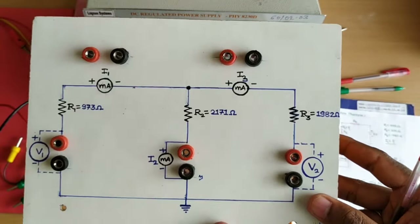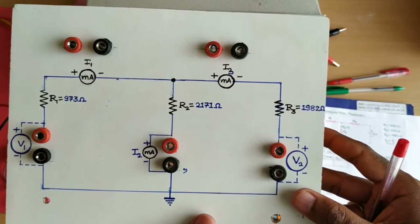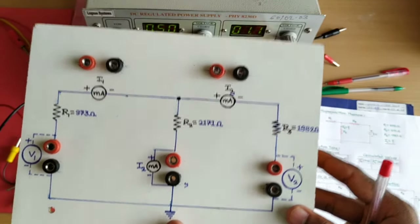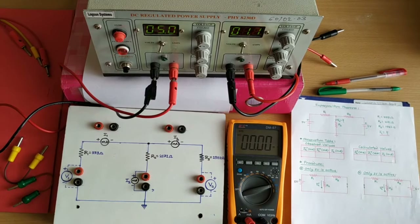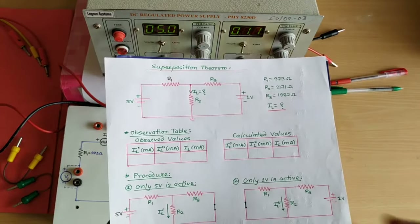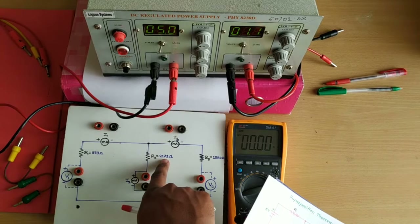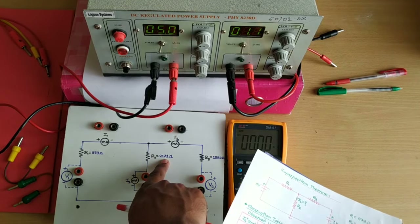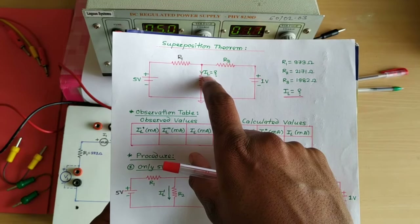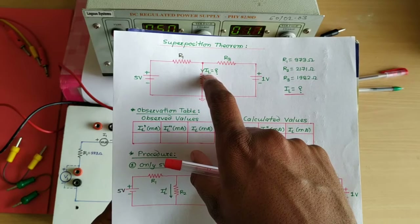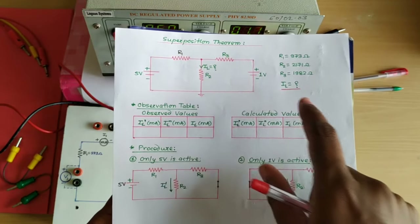This is a handmade kit. In this experiment, we are calculating the current flowing through R2, the middle resistance. R2 is acting as the load resistance, so the current flowing through it is called the load current IL. The values of R1, R2, and R3 are noted.